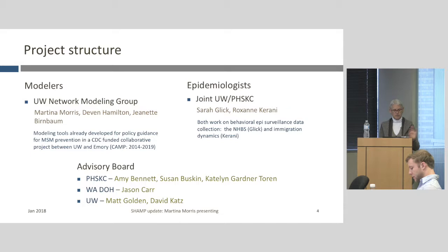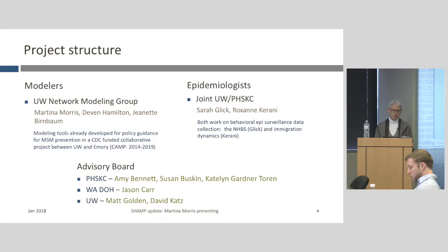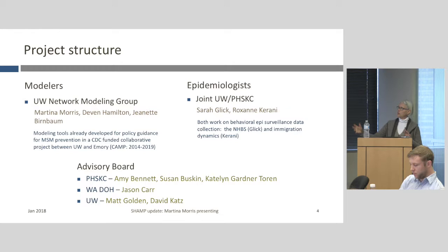The project structure in terms of personnel includes a group of modelers at the University of Washington from what we call the Network Modeling Group — myself, Devon Hamilton, and Jeanette Birnbaum. Some of these modeling tools have already been developed for MSM prevention guidance as part of the CAMP project, with Emory, CDC, and the UW Modeling Group all working on MSM-related prevention. That's a five-year project, and many of those tools are in place. Doing the same kind of locally grounded heterosexual modeling requires serious modifications to the modeling and obviously to the data.